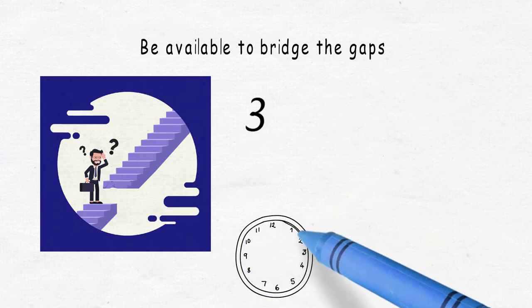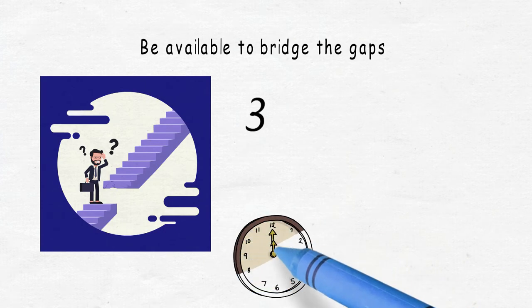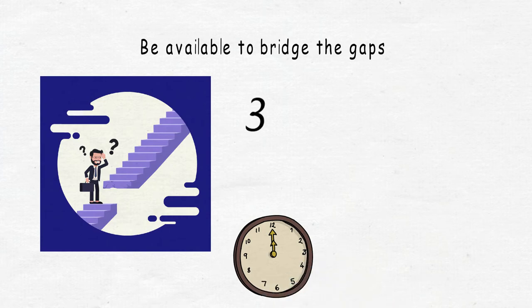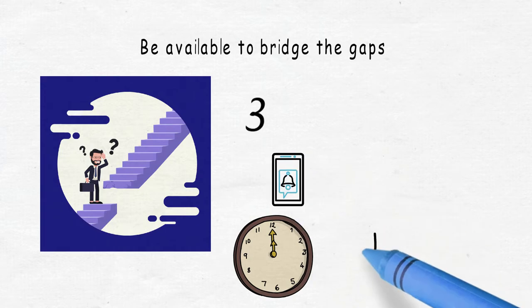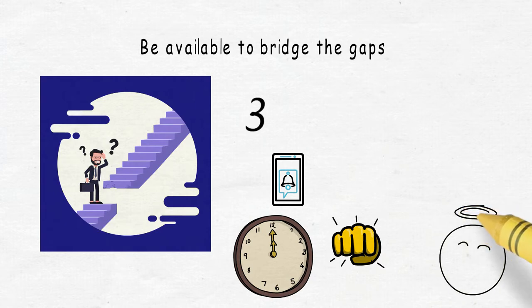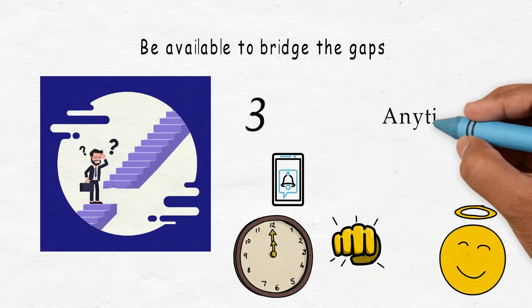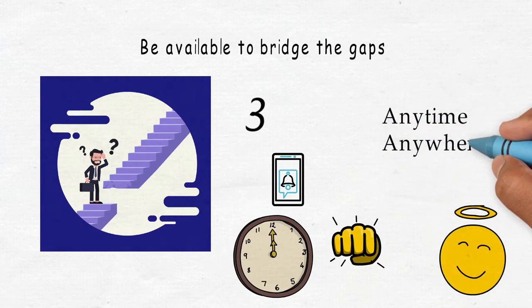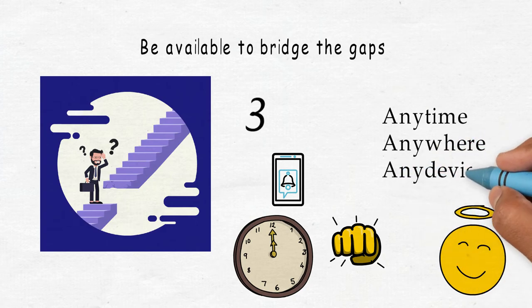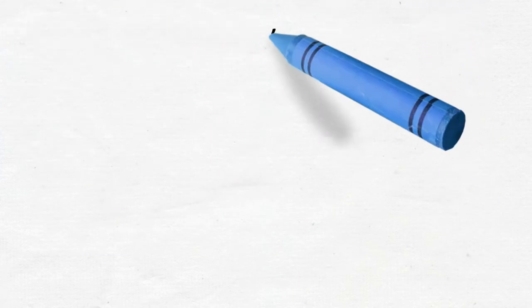That doesn't mean you should be available 24/7, but at the same time, don't be annoyed by a WhatsApp notification at an odd time. If you don't want to be disturbed, turn off your mobile notifications, but don't discourage students from sending a query, because online learning is about anytime, anywhere, and any device.